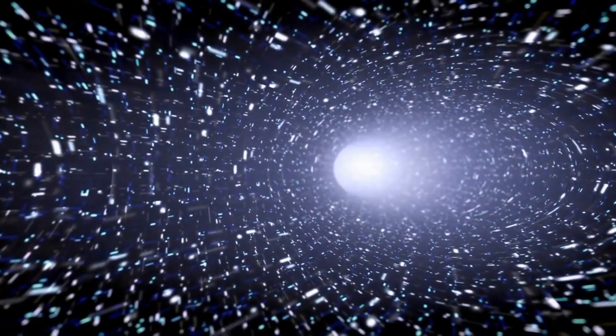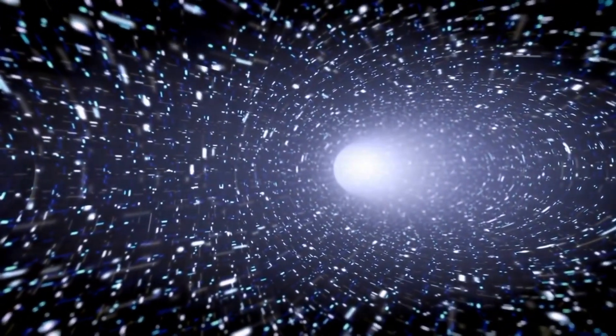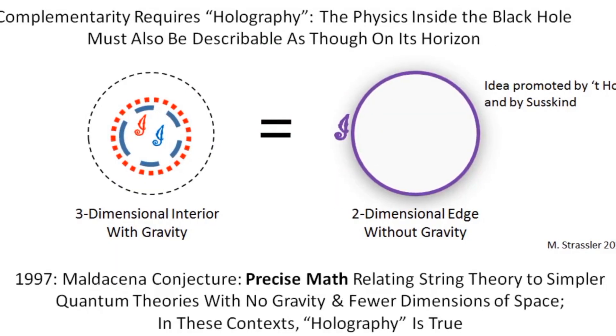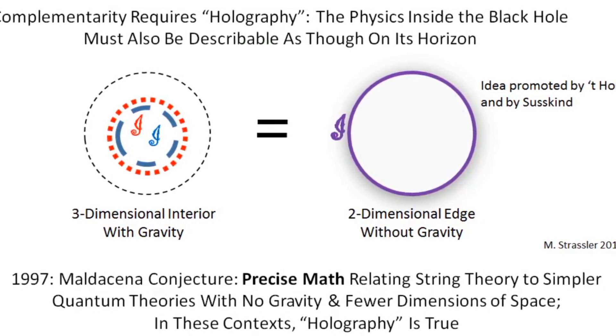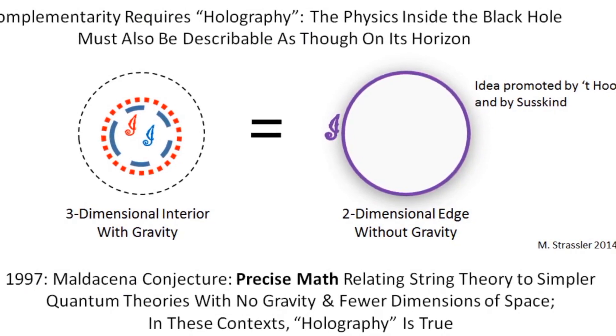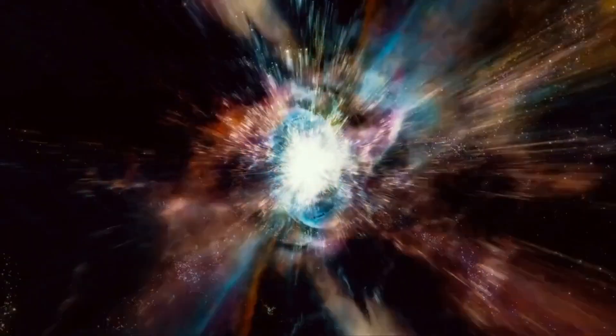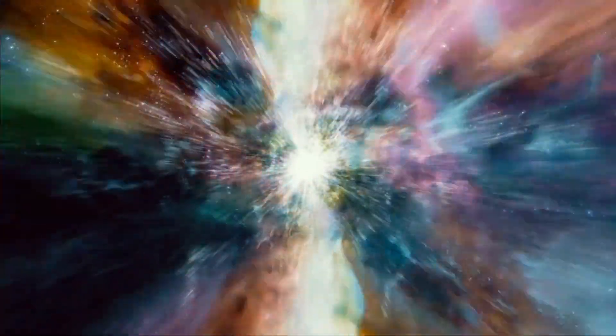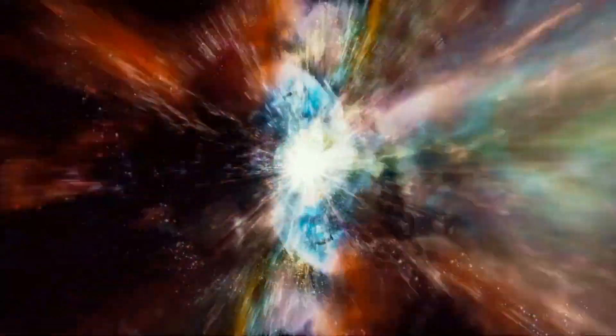The lack of experimental confirmation has prompted physicists to explore alternative approaches to quantum gravity. One such alternative approach is exemplified by the work of physicists like Jonathan Oppenheim, who propose departures from the assumptions of string theory. Oppenheim's research suggests a classical view of gravity, avoiding the need for quantization and addressing fundamental issues such as the black hole information paradox. These alternative approaches challenge the conventional wisdom in theoretical physics and highlight the ongoing quest for a deeper understanding of the fundamental forces governing the universe.